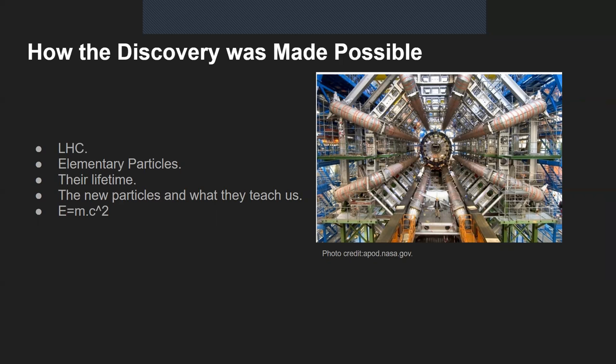There are linear and circular accelerators. The LHC is an example of a circular accelerator, meaning that it accelerates particles in a circular path and in opposite directions to then smash them against each other when desired. The LHC is the largest particle accelerator in the world, having a circumference of 27 kilometers, which is greater than the length of Manhattan, New York.